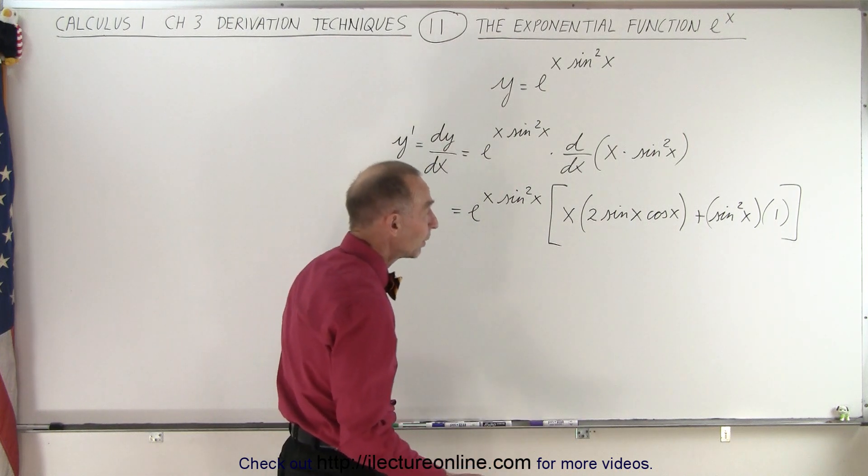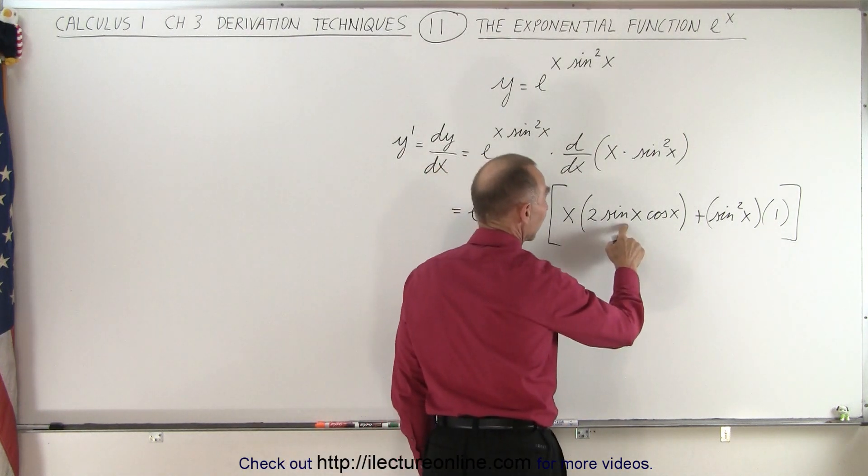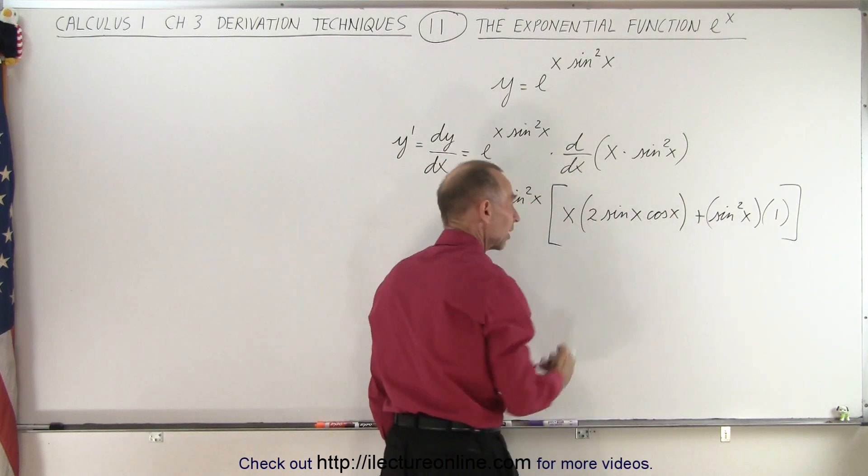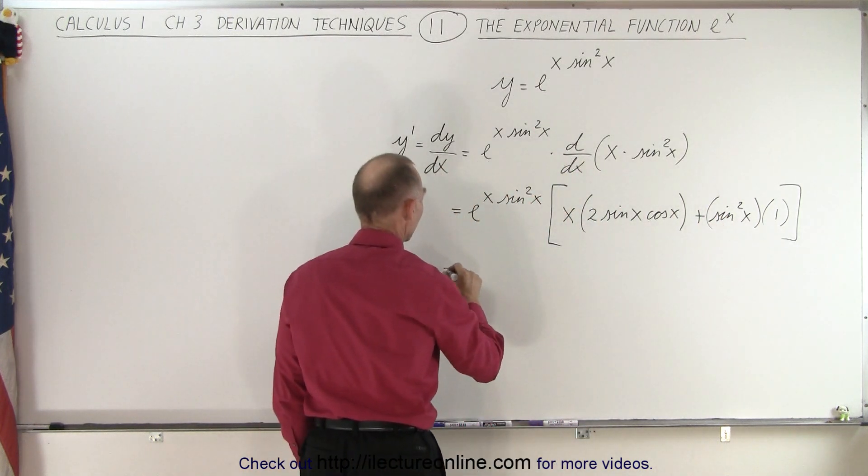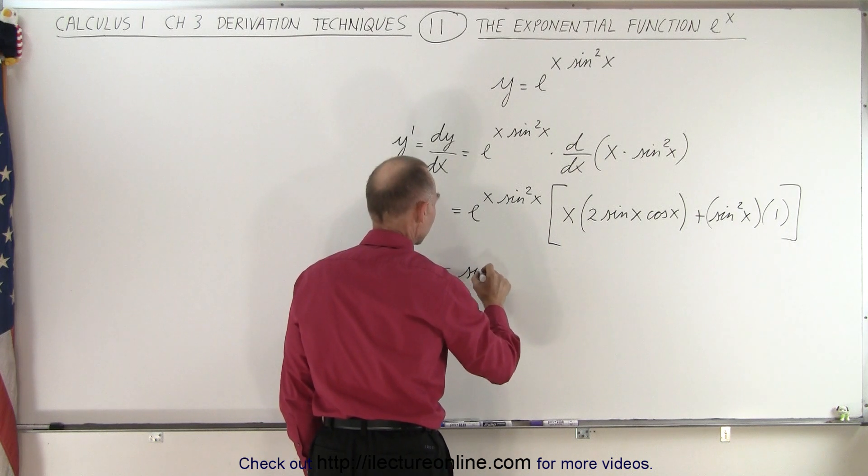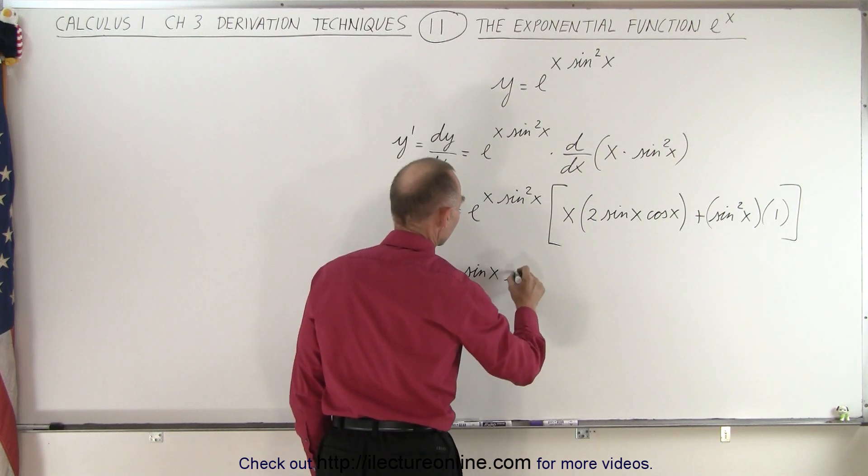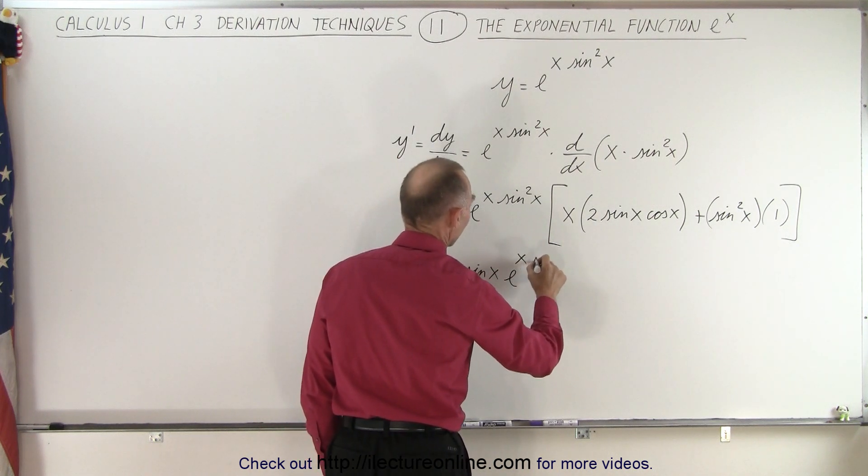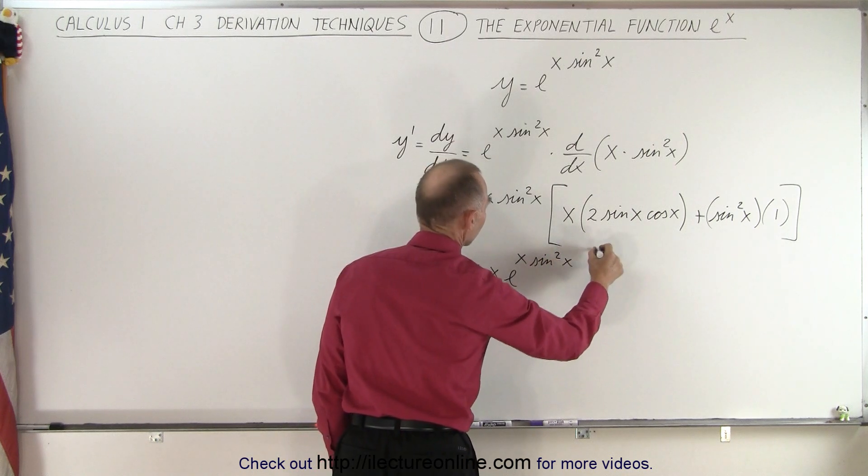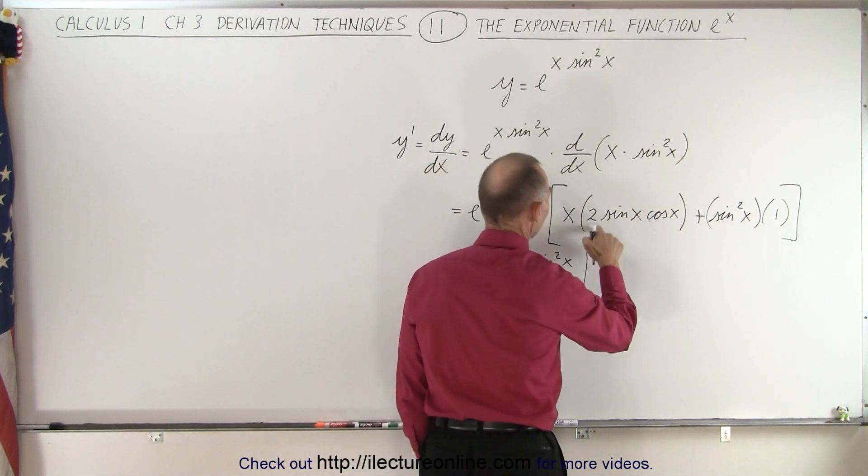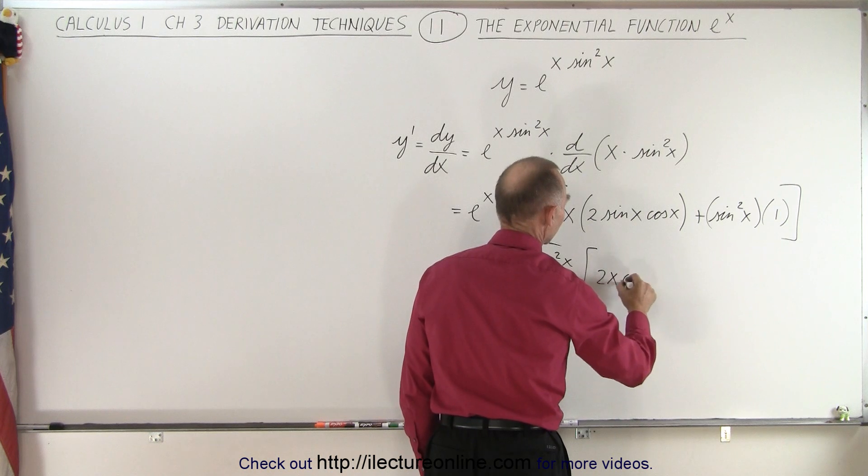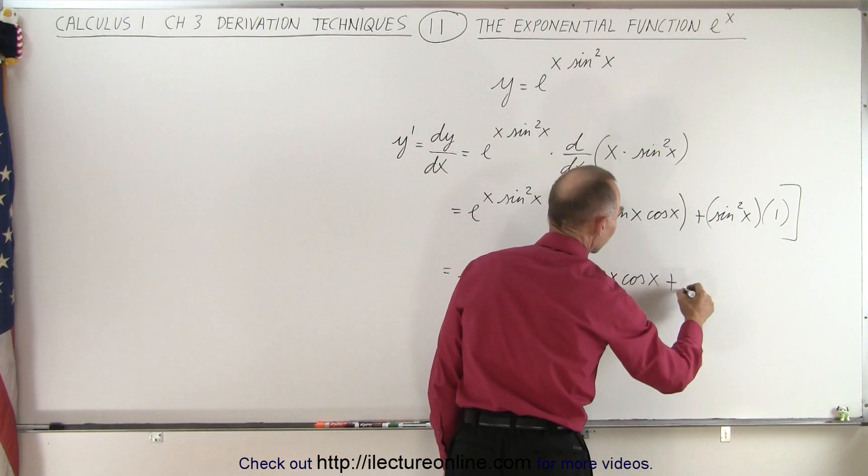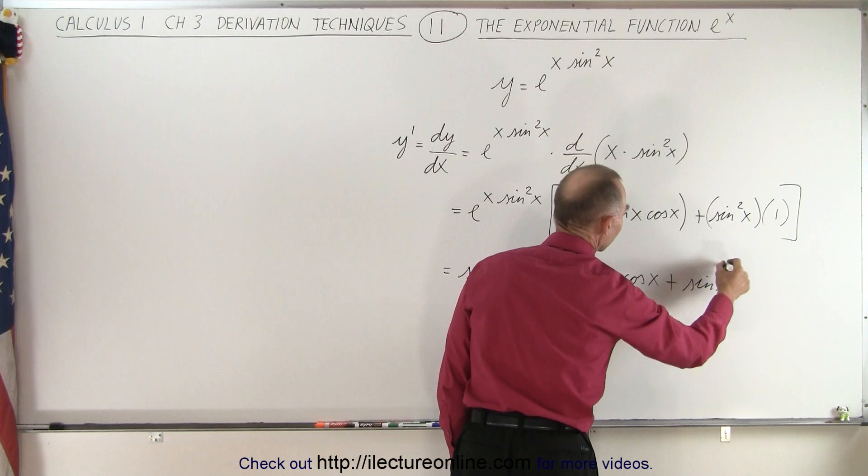Well, I guess we could, because we notice we have a sine of x here, we have a sine of x there, so we could potentially pull out the sine of x. So this could be written as the sine of x times e to the x sine square of x, times—and what we have left is we have 2x times the cosine of x, plus we have only one sine of x left here, sine of x.